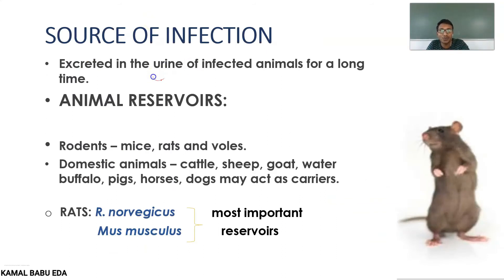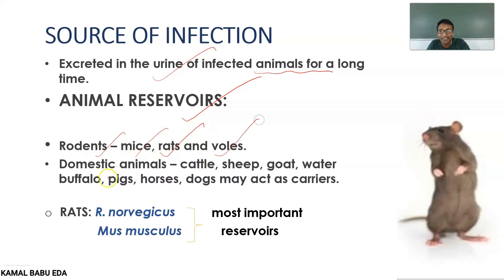The source of infection is the urine of infected animals — whatever urine is excreted is the major source of infection. Coming to reservoirs, we have animal reservoirs including rodents such as mice, rats, and voles, and domestic animals including cattle, sheep, goat, water buffalo, pigs, horses, and dogs, which may act as carriers. For rat species, the two important reservoir species are Rattus norvegicus and Mus musculus.